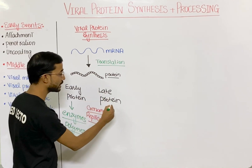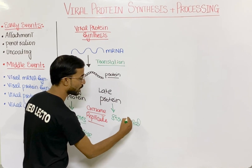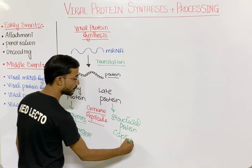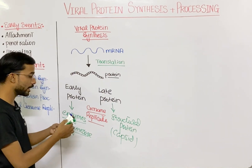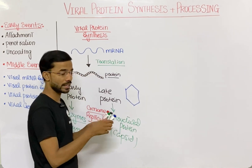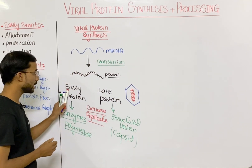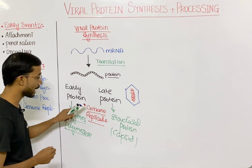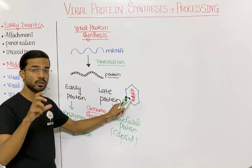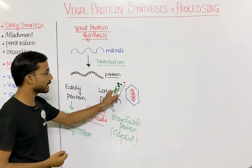In the late proteins, you will see the synthesis of structural proteins. Basically in structural proteins you will see mostly the capsid. So ultimately you see two important components: the genome and the capsid. Early proteins include the enzymes that replicate the genome, and late proteins are the structural proteins — mostly the capsid that surrounds the virus.